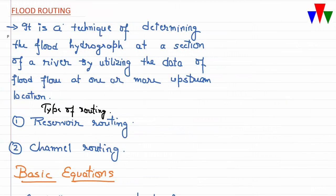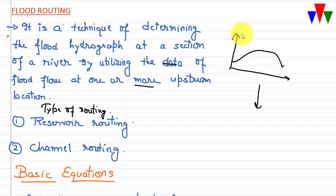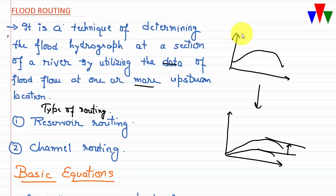In this lecture we will be studying about flood routing. Flood routing is a technique of determining the flood hydrograph at a section of a river by utilizing the data of flood flow at one or more upstream locations. If we have an input flood hydrograph and it passes through some channel or reservoir, the output becomes attenuated — the peak is reduced. The process of determining the flood hydrograph after it has passed through a channel or reservoir is called flood routing.